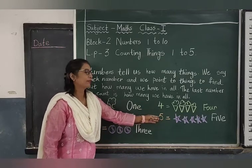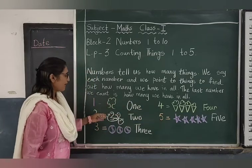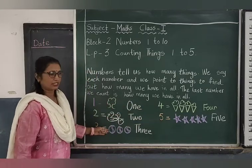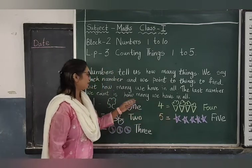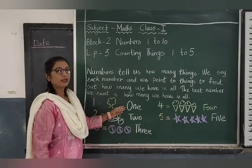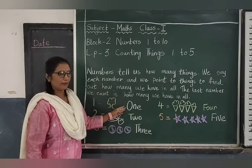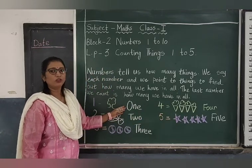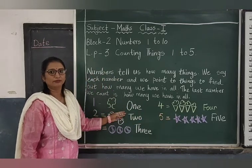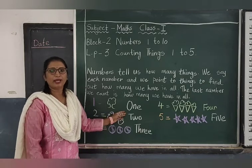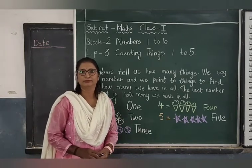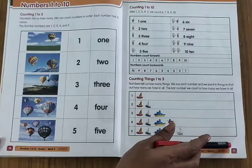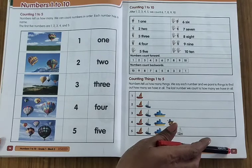These are numbers. These are pictures. Yes, children. Now this is the number names 1 to 5. Now open your reader, page number 17.